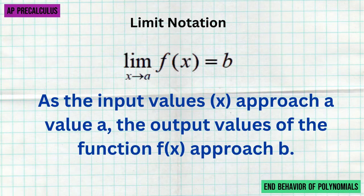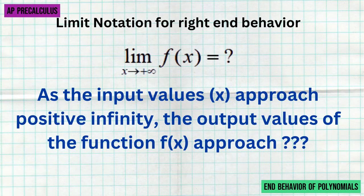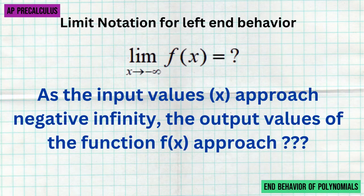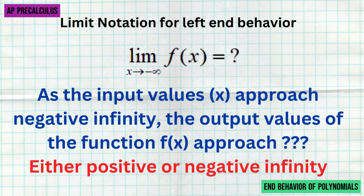When we're talking about the limit notation for right end behavior, the value that x is approaching is positive infinity. So right end behavior asks: what is the limit of our function as x approaches positive infinity? Then the left end behavior asks: what is the limit of our function as x goes towards negative infinity? As the input values approach negative infinity — the left end — the output values of the function approach either positive or negative infinity.